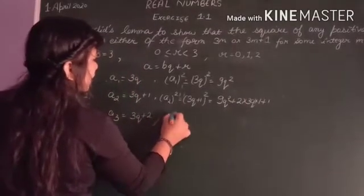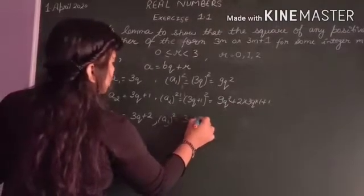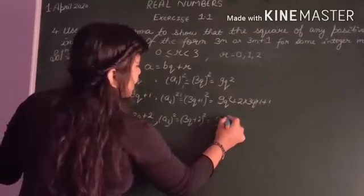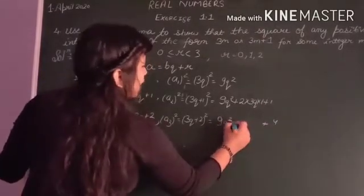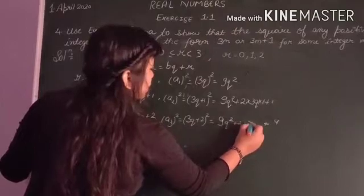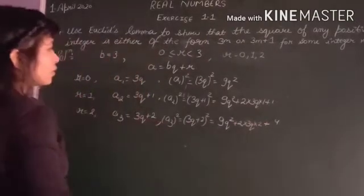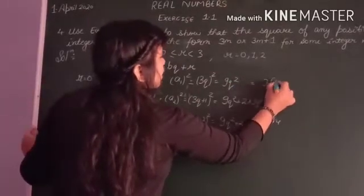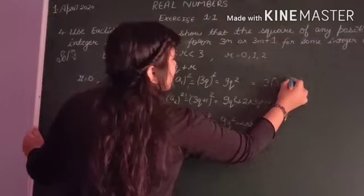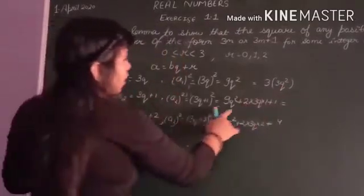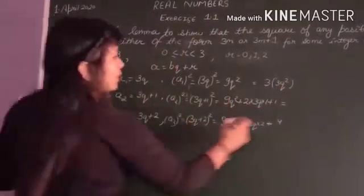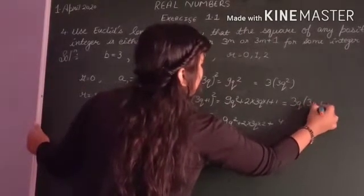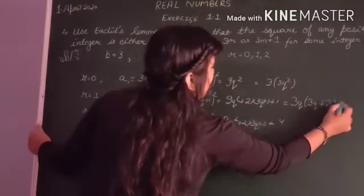Now, a3 square, we are getting 3q plus 2 whole square, which is 9q square plus 4 and 2 multiplied by 3q multiplied by 2. So you know that this can be written in the form of 3, 3q square. Here also, now we are taking 3 common. So it is 3 into 3q square plus 2q plus 1.